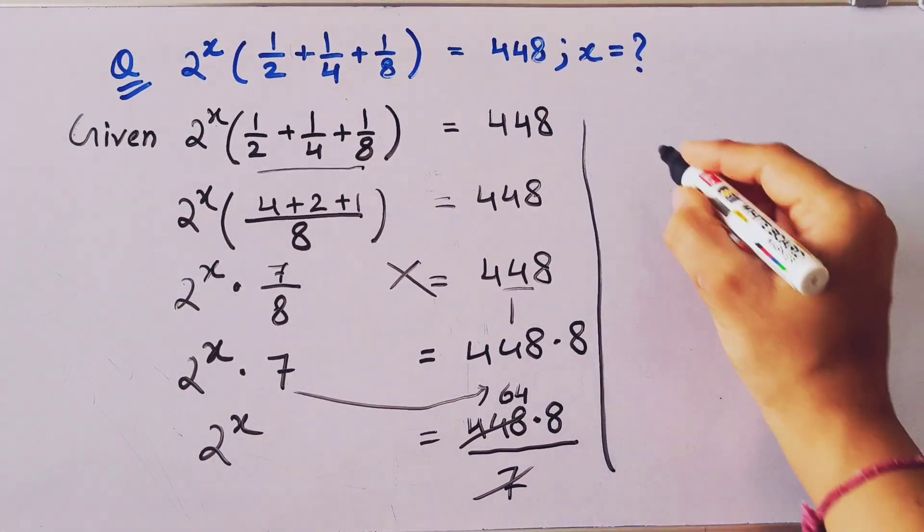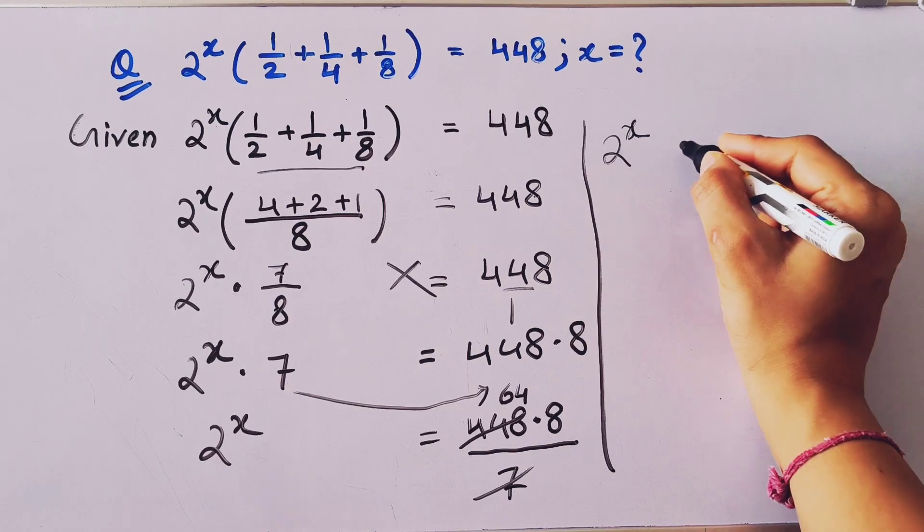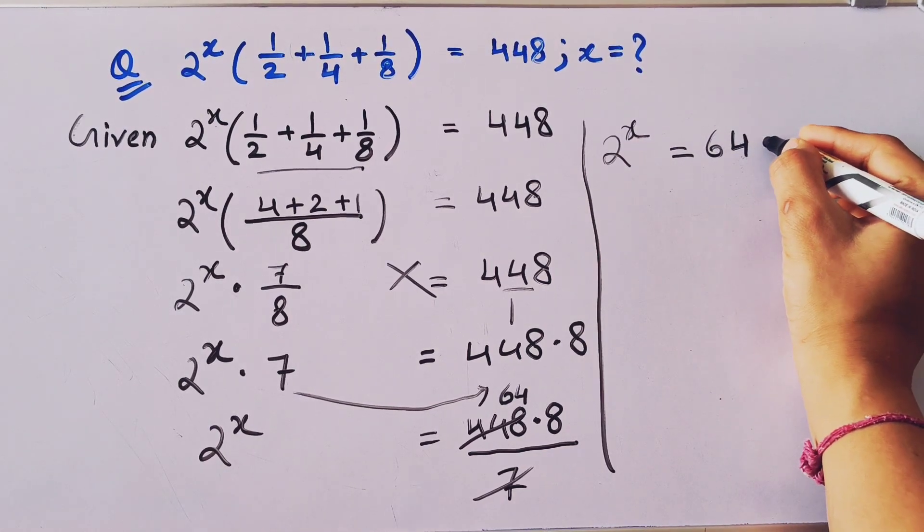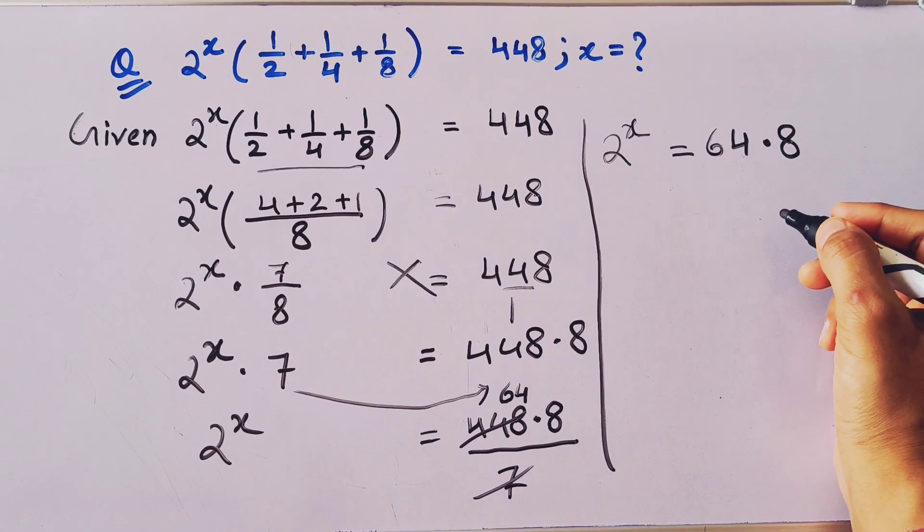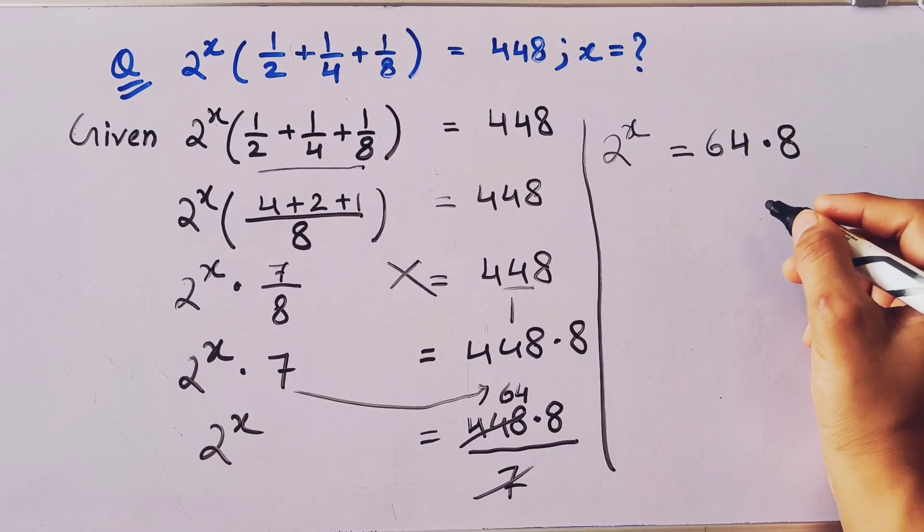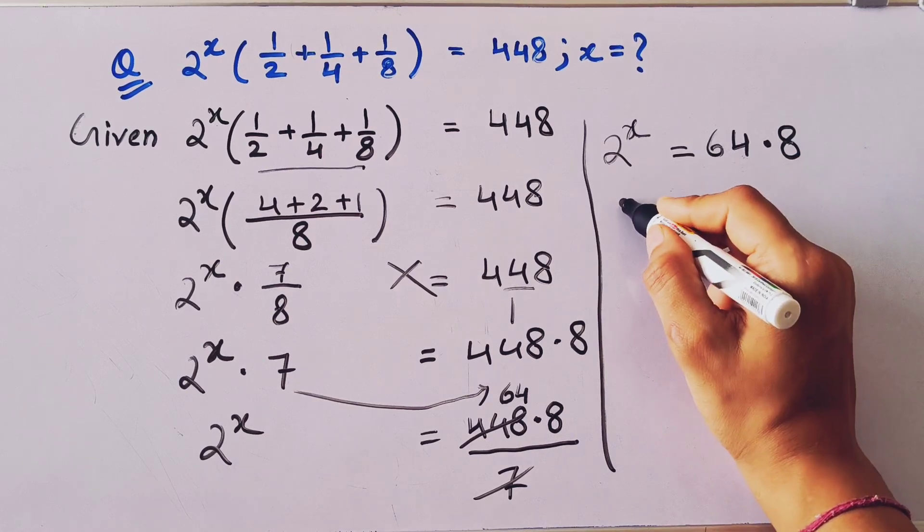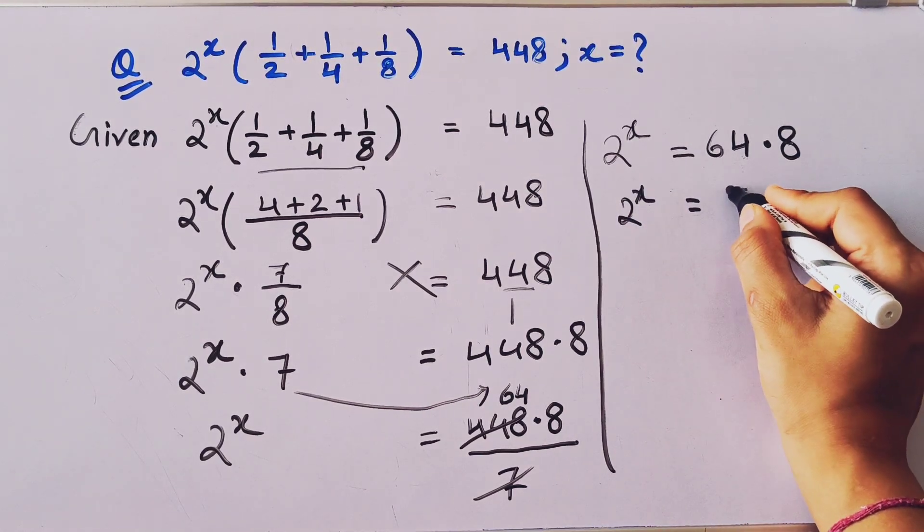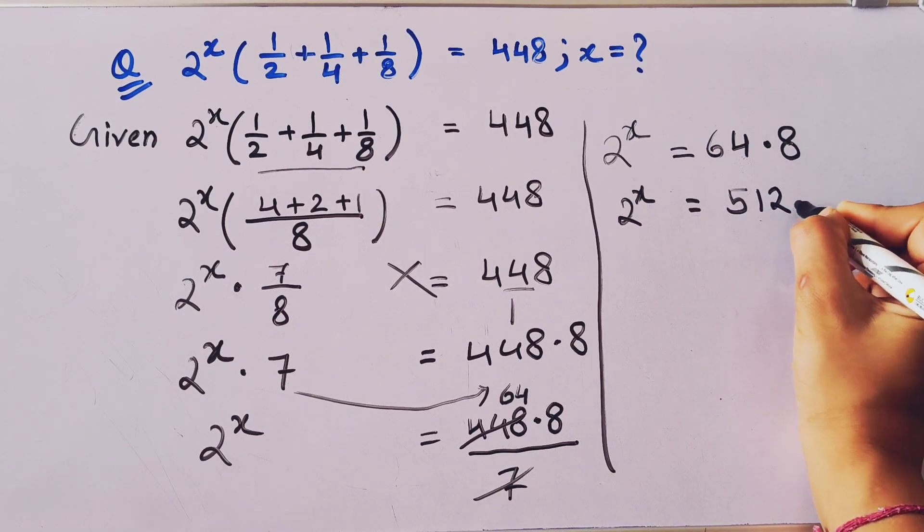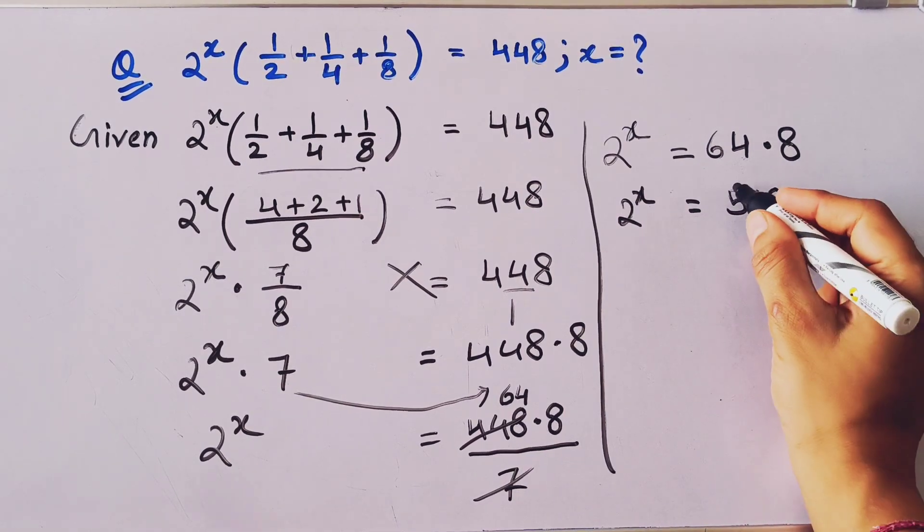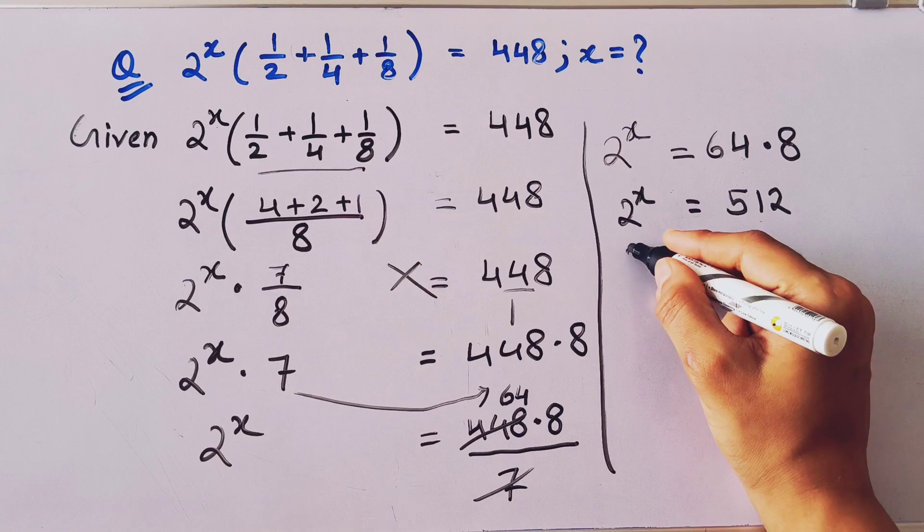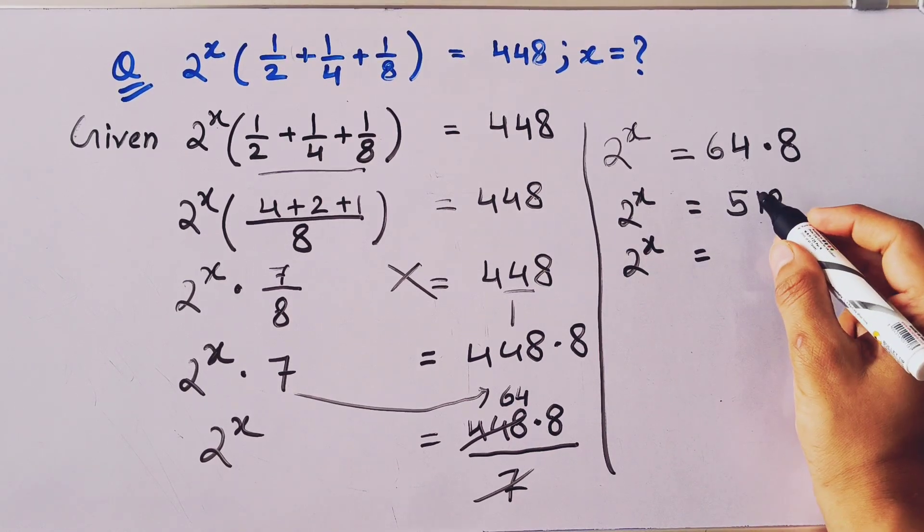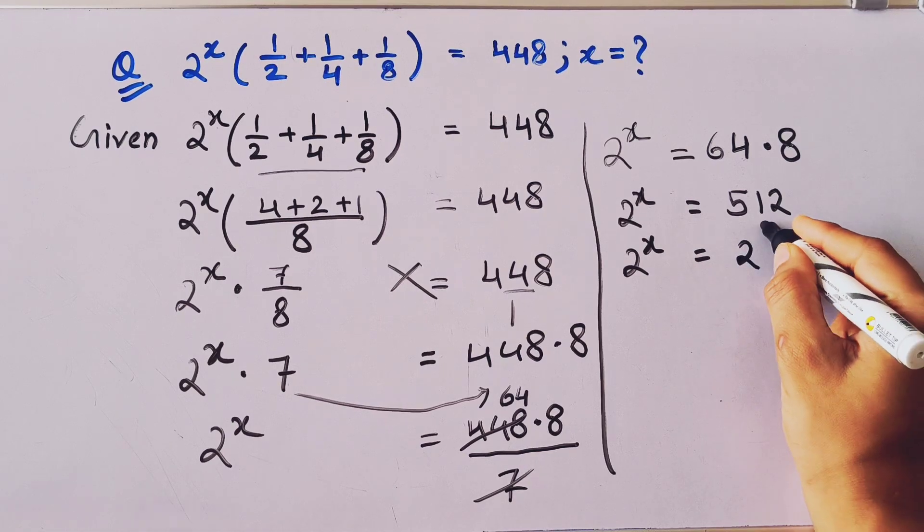Now we'll multiply this. So by multiplying we'll have 512, and 512 is 4. We can write 512 as 2 to the power 9.